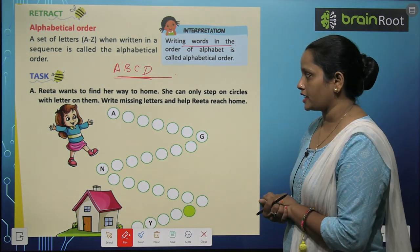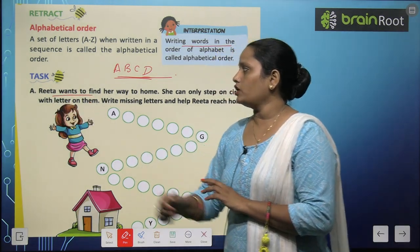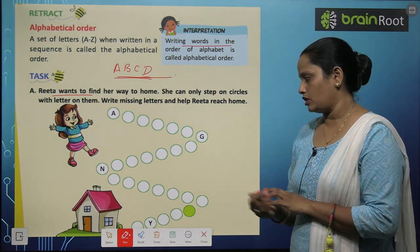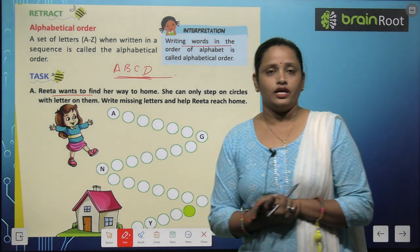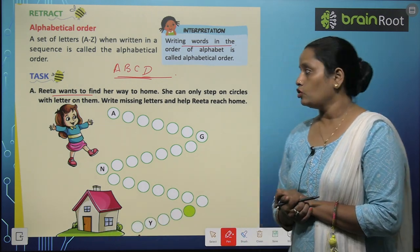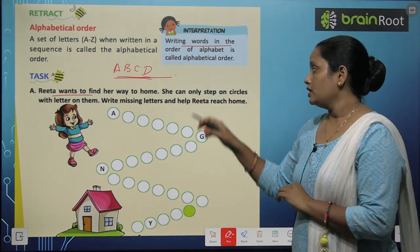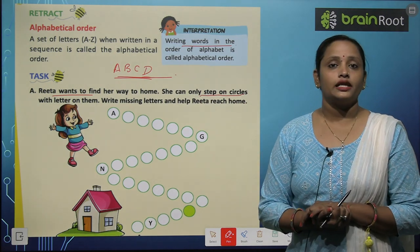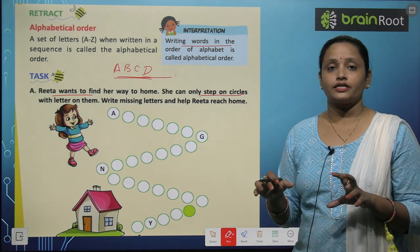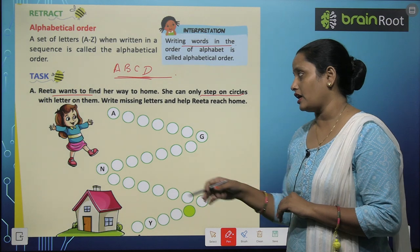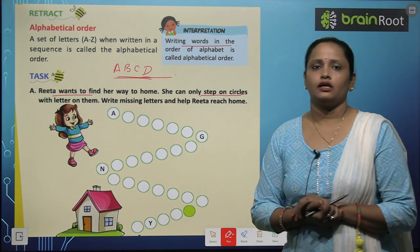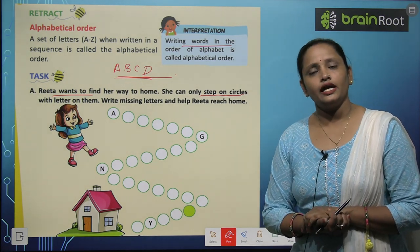Jaldi se dekhte hain ki exercise kya hai. Reetha wants to find her way home. Reetha ko apne ghar jaana hai. Here she is, and here is her home — yeh uska ghar hai. She can only step on circles with letters on them. To un circles pe hi wo apne pair rakh sakti hai jisme letters hain. Jitne bhi circles hain wo saare khaali hain baaki.